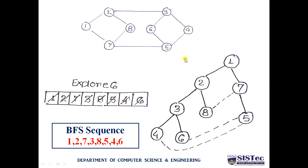The last element is node 6. Exploring node 6, we have options 3 and 5, but both have already been explored. So node 6 gets no new children. Node 6 has a direct connection from 3 and a partial connection with 5. At the end of the breadth-first search, the traversal sequence is: 1, 2, 7, 3, 8, 5, 4, 6.